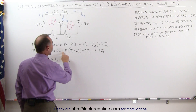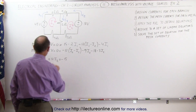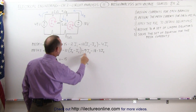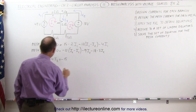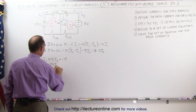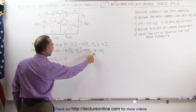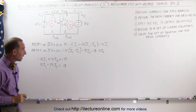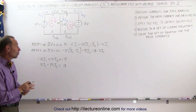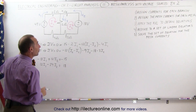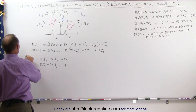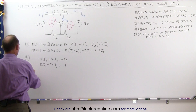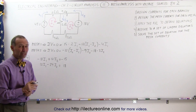For the second equation: minus 12 times minus I1 gives a plus 12 I1. Collecting the I2 terms: minus 12, minus 9 is minus 21, minus 3 gives minus 24 I2. Moving minus 18 volts to the other side gives plus 18 volts. We've now reduced this to a set of linear equations — that's step 4. Step 3 was applying the KVL rule, and now step 5, we're going to solve these two equations, and the best way to do that is algebraically.